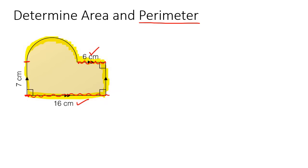So if this is 7 centimeters, then this would also be 7 centimeters, because this is a rectangle. The opposite sides of a rectangle are the same. So this would also be 7 centimeters. We've got this length, we've got this length, the only length that we don't have is this half circle part over here.